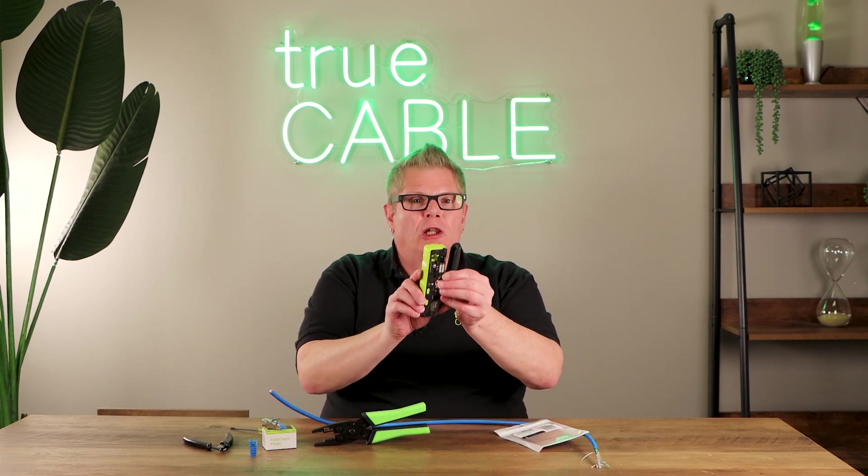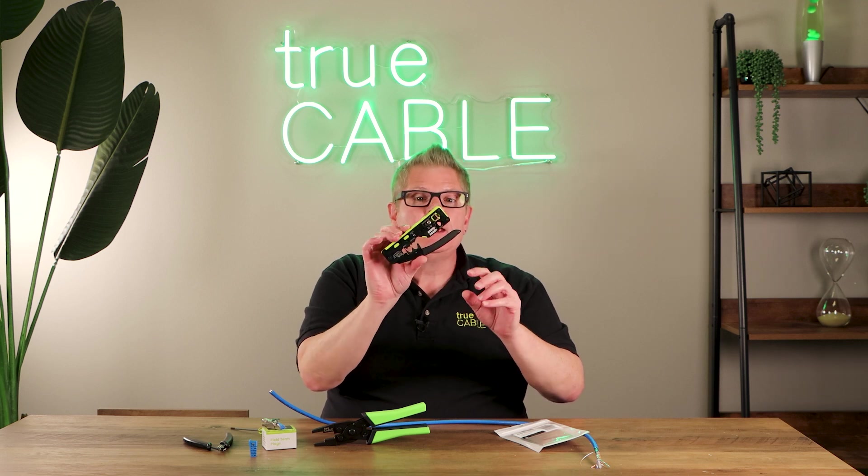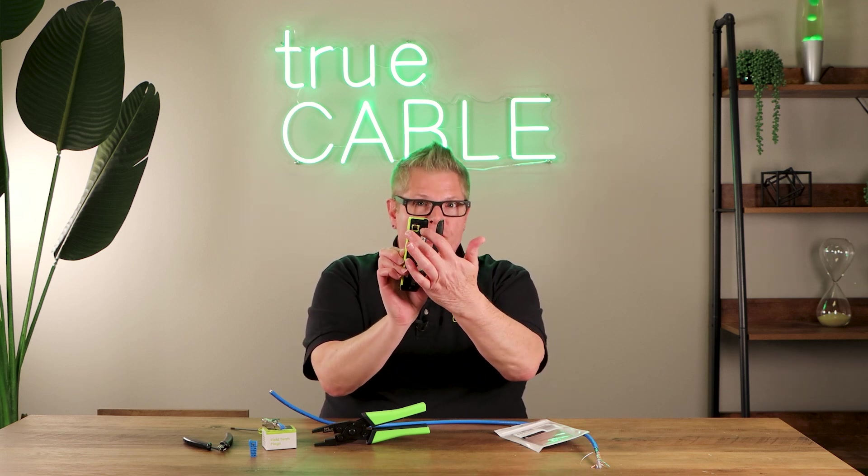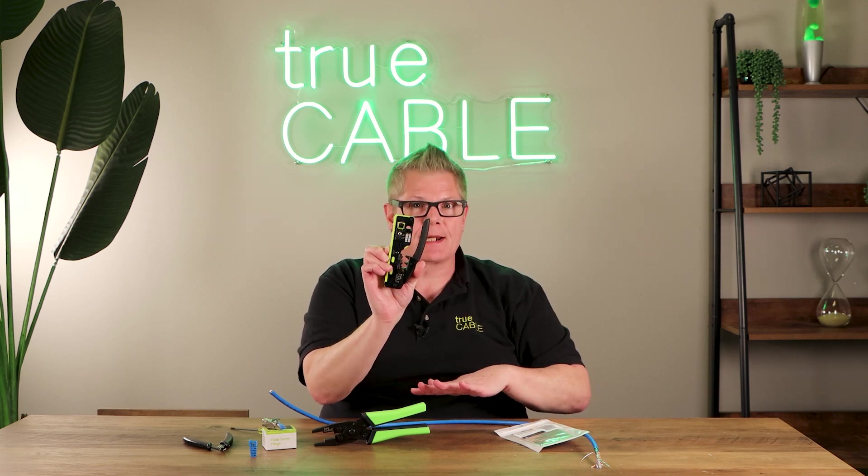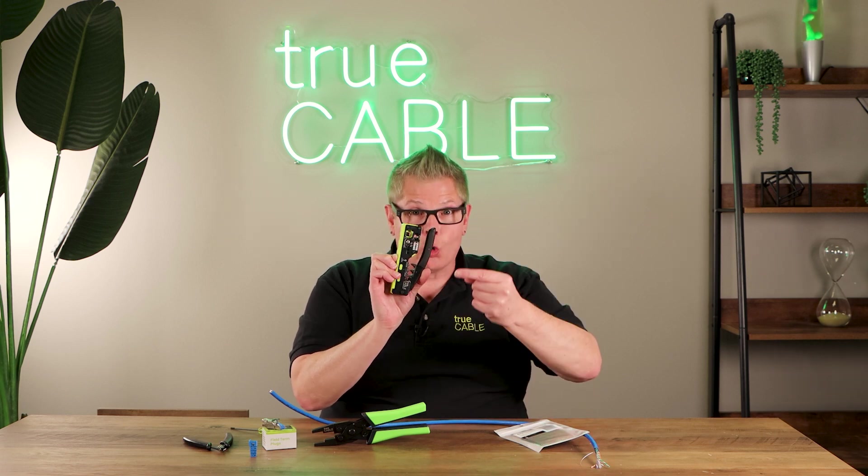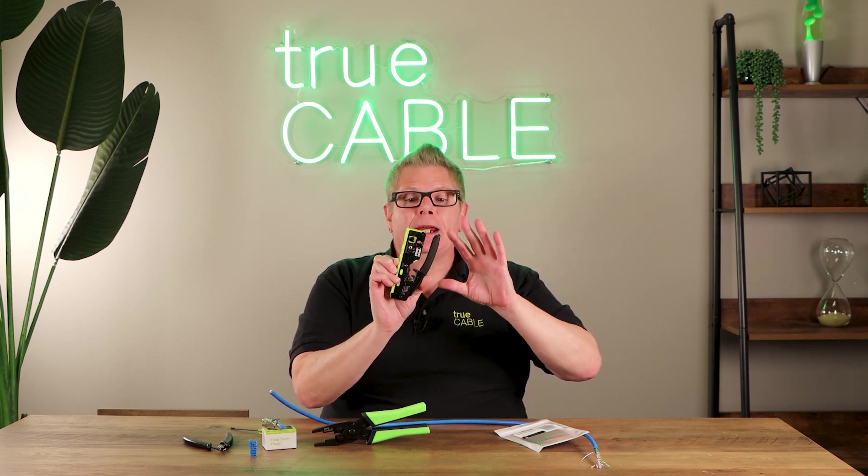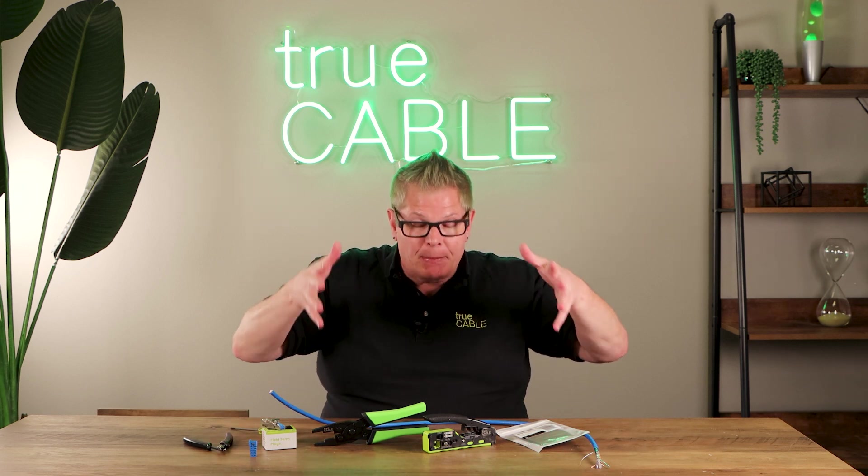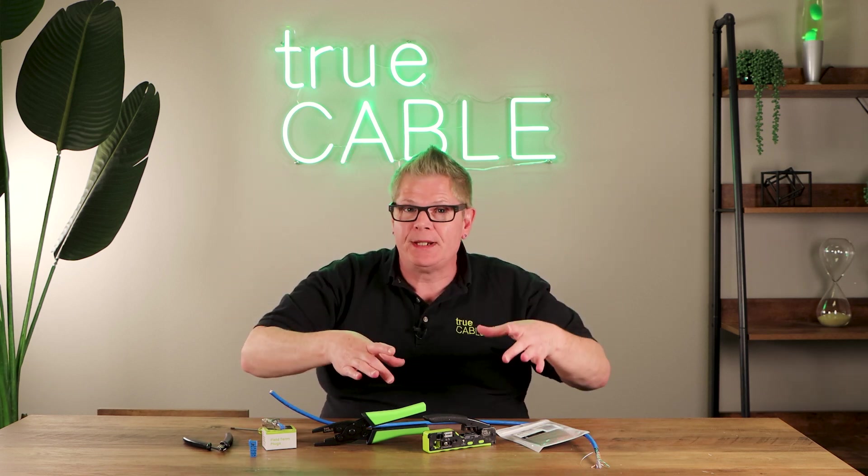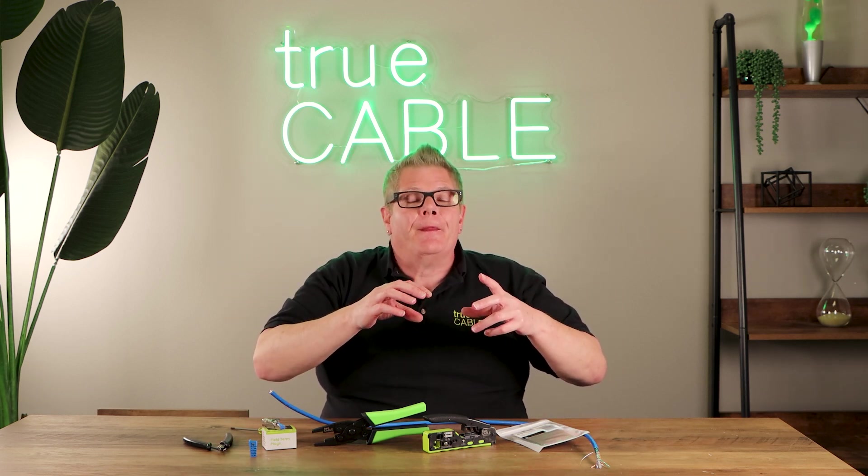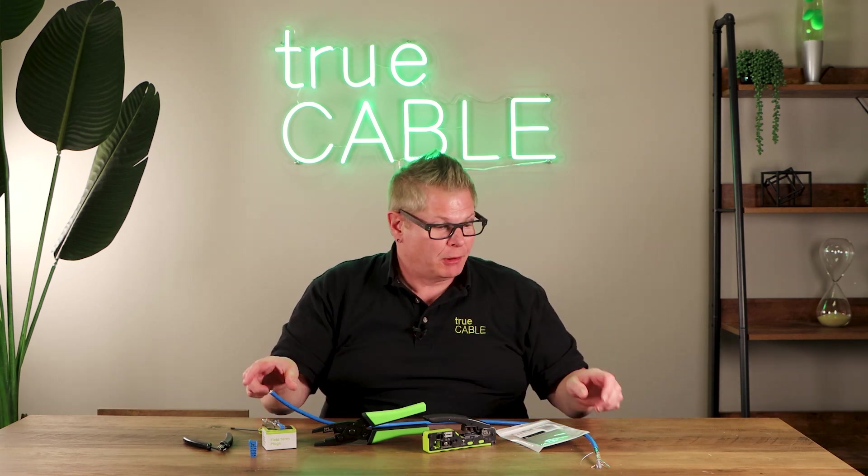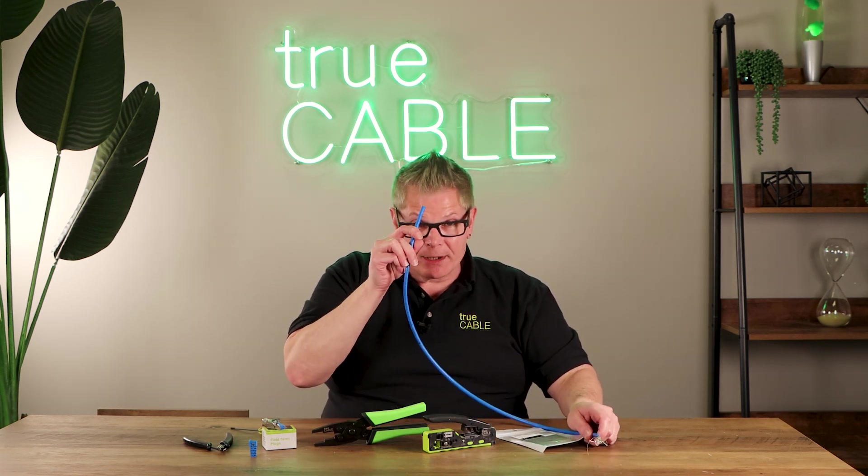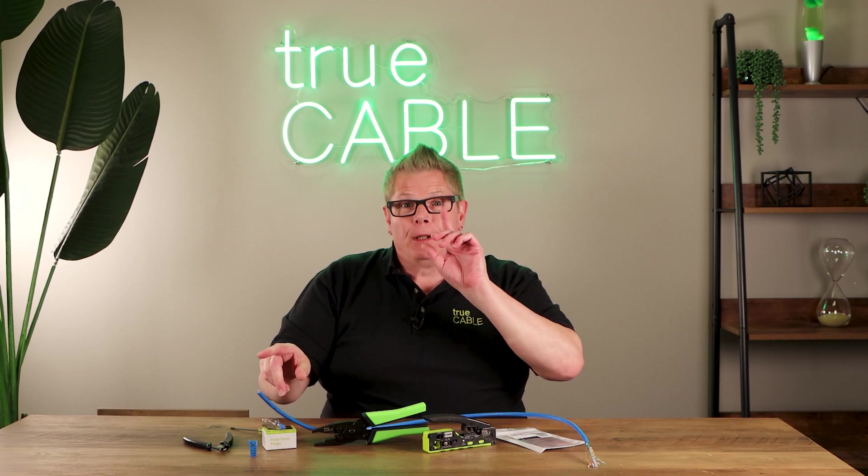And additionally, I have our all-in-one crimp and termination tool here, because I'll make use of the stripper portion on it, which is excellent for stripping this kind of cable. It'll give you a nice score around the cable jacket, and it won't bite into the cable shield or nick a conductor. So with all of that said, we're going to go ahead and get into a lighted box situation where it can give you a real detailed close-ups, and then we're going to go through and put a field termination plug onto our Category 6A shielded cable.